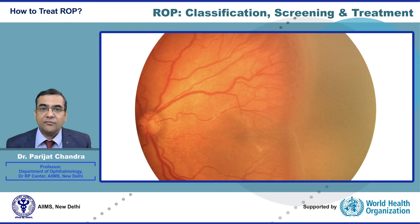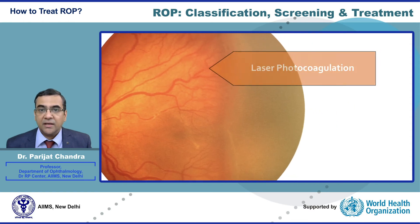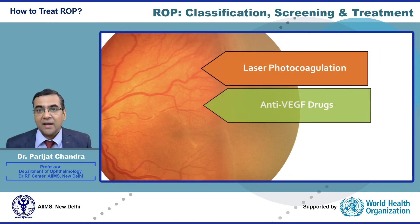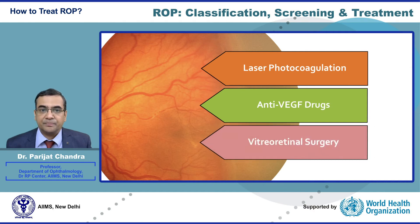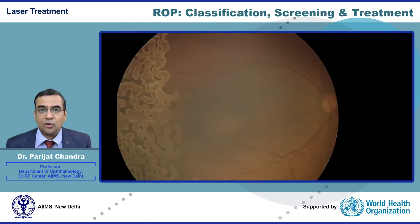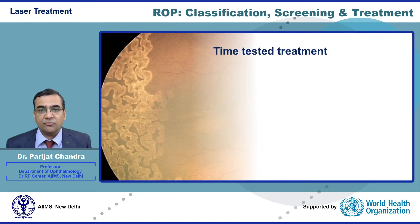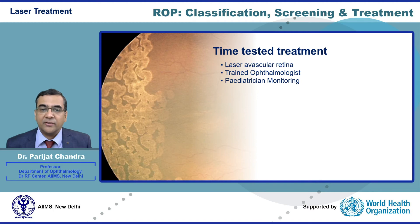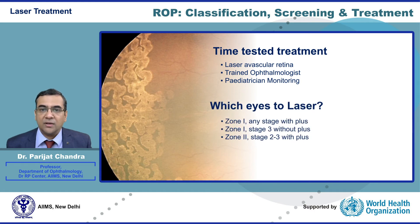ROP can be treated by three modalities: laser photocoagulation, intravitreal anti-VEGF drugs, and vitreoretinal surgery. Laser photocoagulation is a time-tested treatment. The avascular retina is treated by a trained ophthalmologist under monitoring by a neonatologist, pediatrician, or anesthesiologist. The Early Treatment for ROP, or ETROP, cooperative group has provided guidelines for laser treatment.